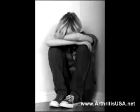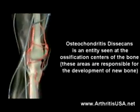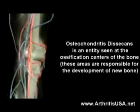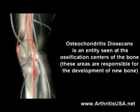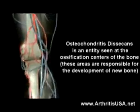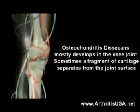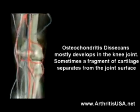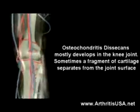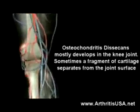Osteochondritis dissecans is typically seen in young males. It is an entity seen at the ossification centers of the bone — the areas responsible for the development of new bone. It mostly develops in the knee joint, and sometimes a fragment of cartilage separates from the joint surface.